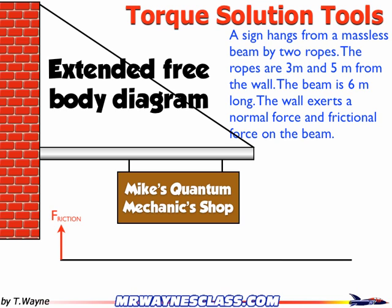Now I'm going to populate this with the forces from the problem. The problem states: a sign hangs from a massless beam by two ropes; the ropes are 3 meters and 5 meters from the wall on the left. The beam is 6 meters long. The wall exerts a normal force and a frictional force on the beam. The first force already drawn is the frictional force next to the wall, then the normal force exerted by the wall, then the tension on the left cable, the tension on the right cable, and the final tension on the cable on the very right of the beam.